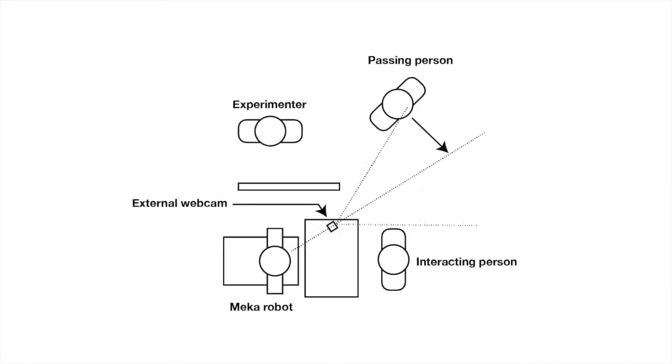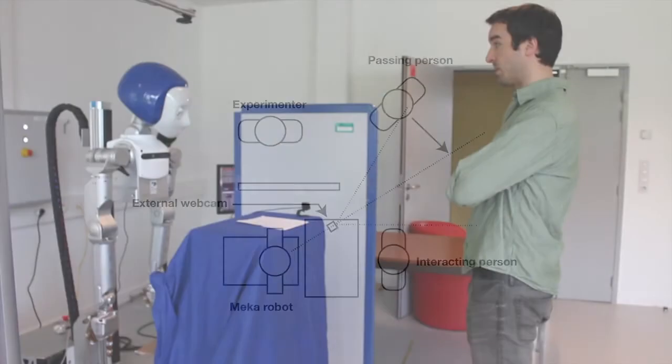To investigate people's perceptions on different types of robot gaze, we designed an experiment where a person interacts with a receptionist robot while a person passes in the background. Three conditions were tested.